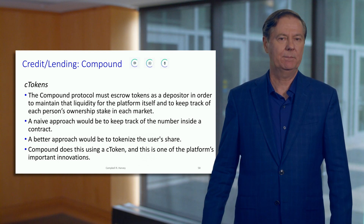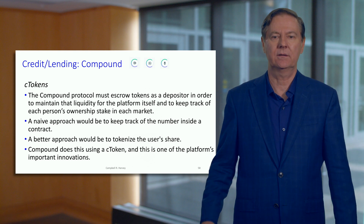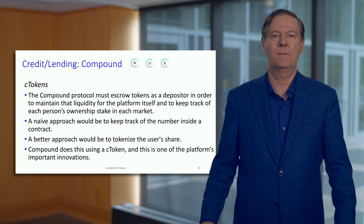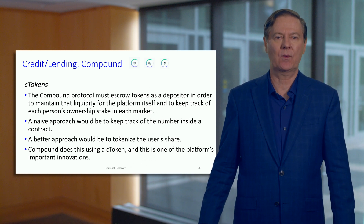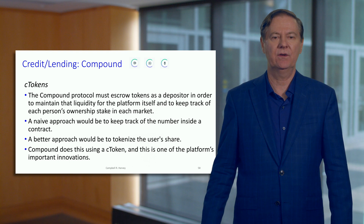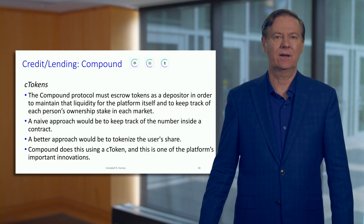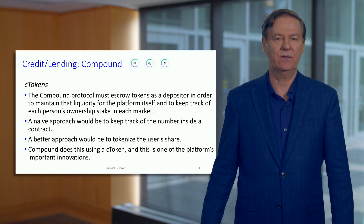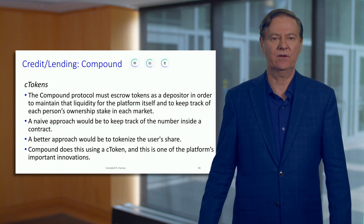When you deposit tokens as a supplier in Compound, this is a service and you expect a rate of return. But it's complicated to keep track of all the depositors and the different tokens. We want to do this in an algorithmic and straightforward way. The logical thing to do is to tokenize the user's share of the pool — you deposit something and you get a token that represents your participation in that pool.